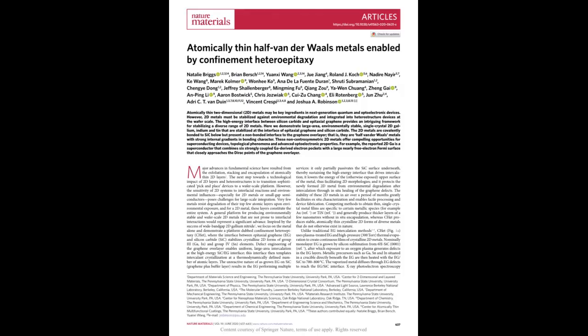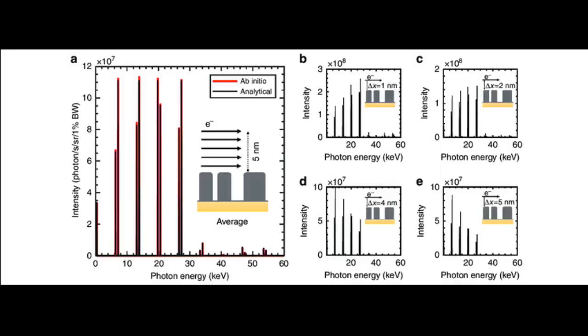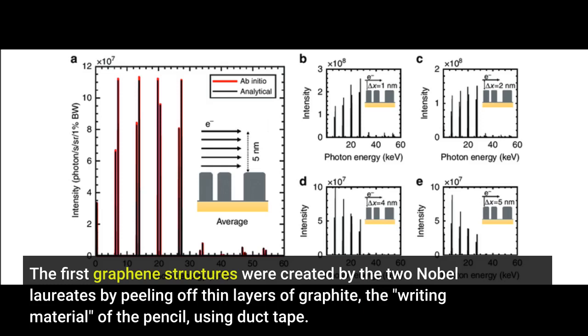Graphene is an artificial structure of a single atomic thickness made from carbon atoms. The first graphene structures were created by the two Nobel laureates by peeling off thin layers of graphite, the writing material of the pencil, using duct tape.